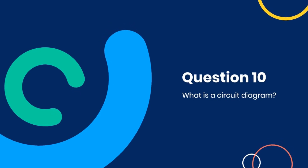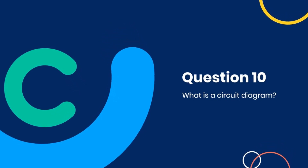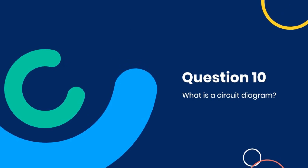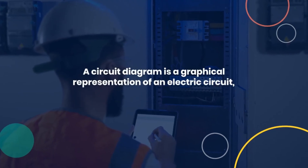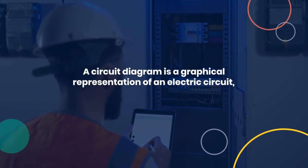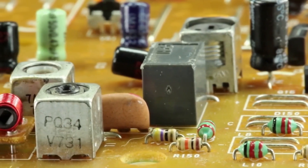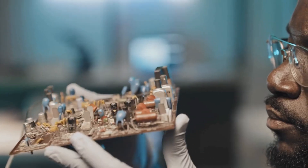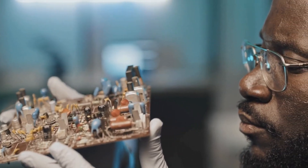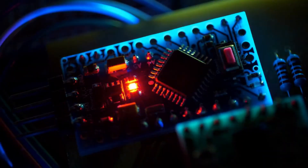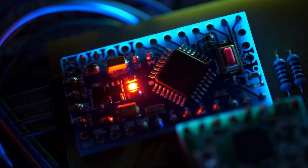Question ten: What is a circuit diagram? A circuit diagram is a graphical representation of an electric circuit showing the connections and components using standardized symbols. It helps in understanding and designing electrical circuits and systems. Being able to read and create circuit diagrams is a fundamental skill for any technician.